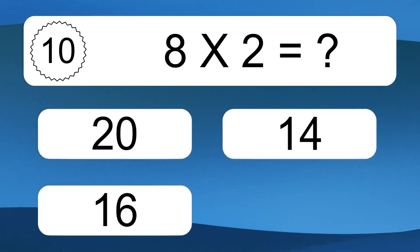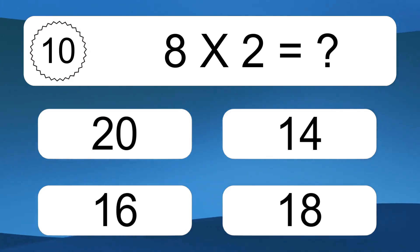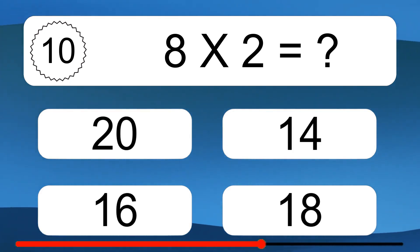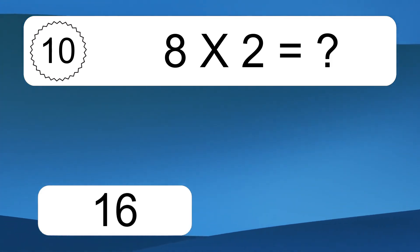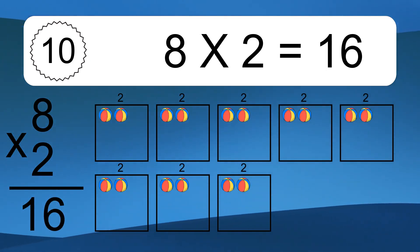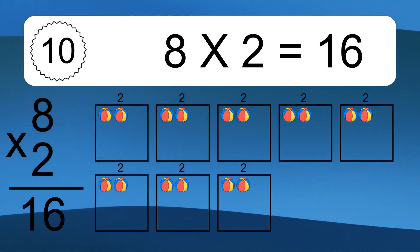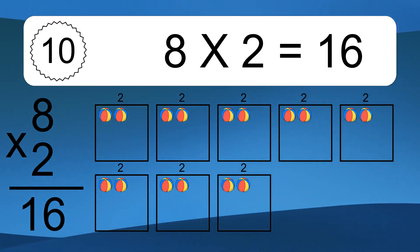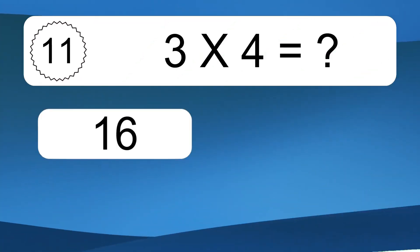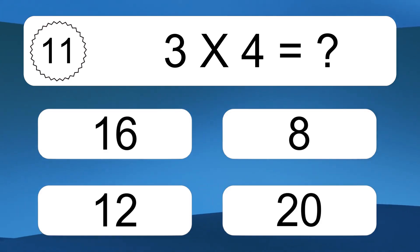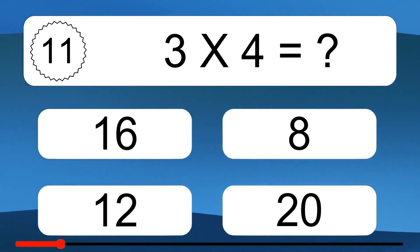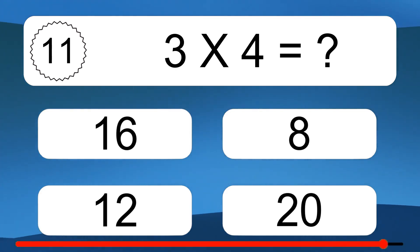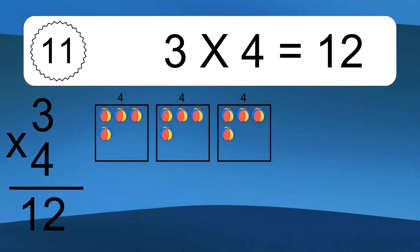8 times 2 equals what? 8 times 2 equals 16. We have 8 boxes, and each box has 2 colorful balls inside. If you count all the balls in all the boxes together, you will have 8 times 2 balls. This equals 16 balls.